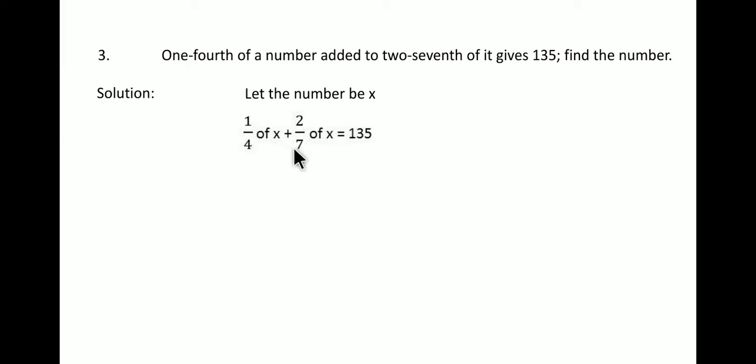When you add, you get 135. So this for simplifying becomes x by four, as one by four of x means x times one by four, and two times x becomes two x by seven equals 135. So here we find the LCM of seven and four, that is equal to 28.